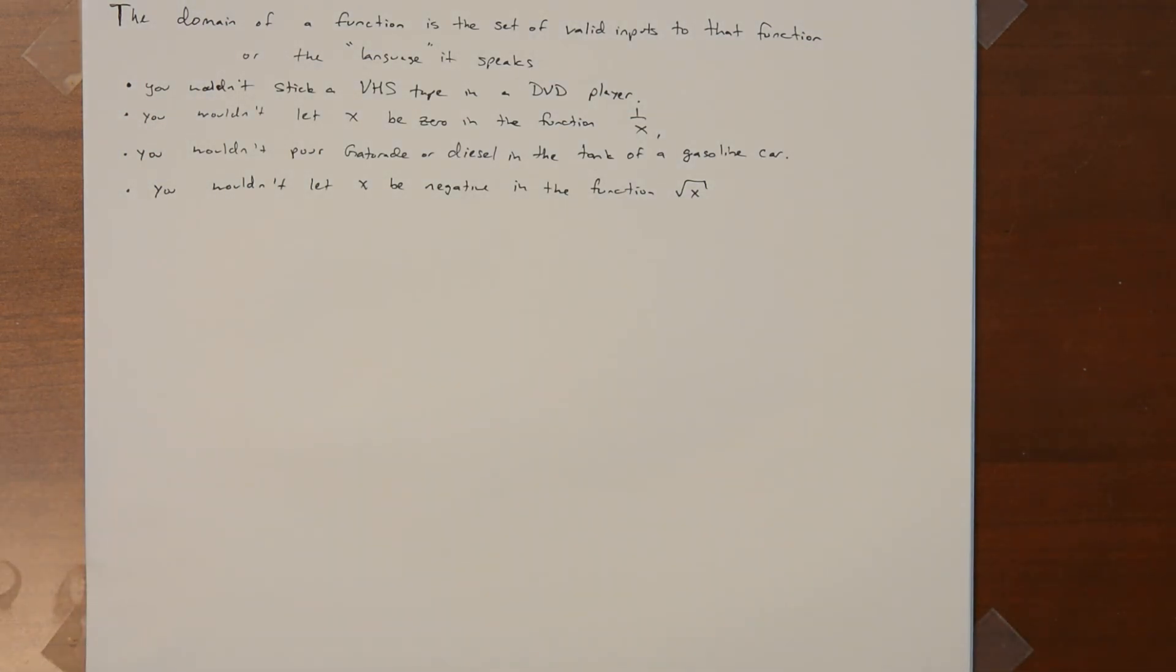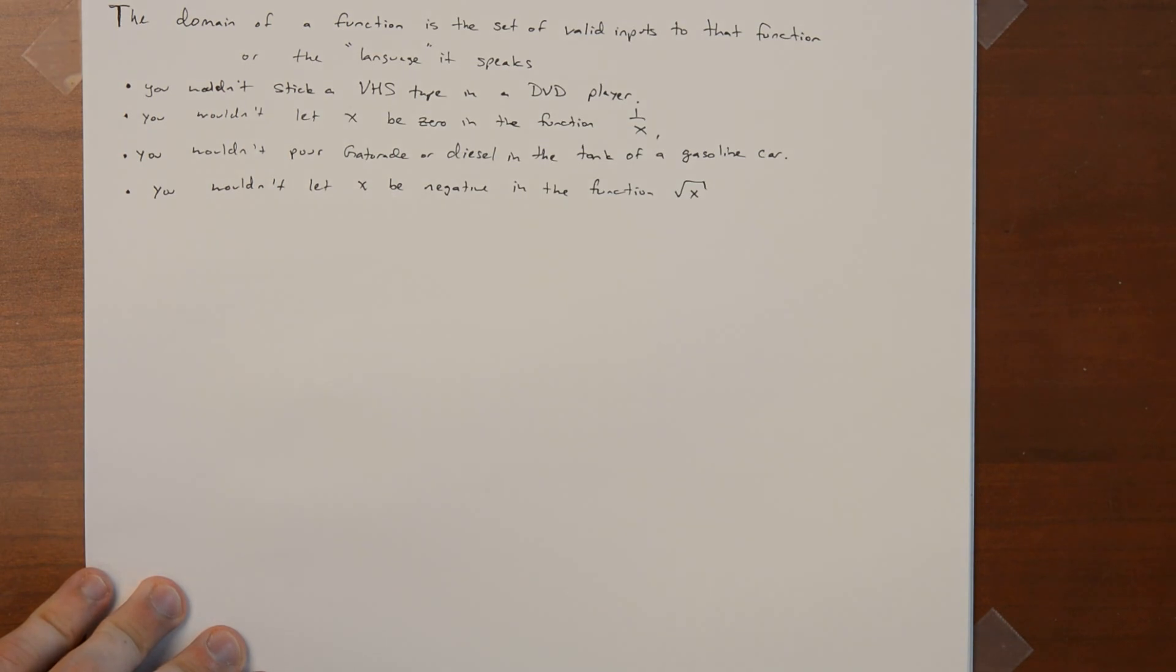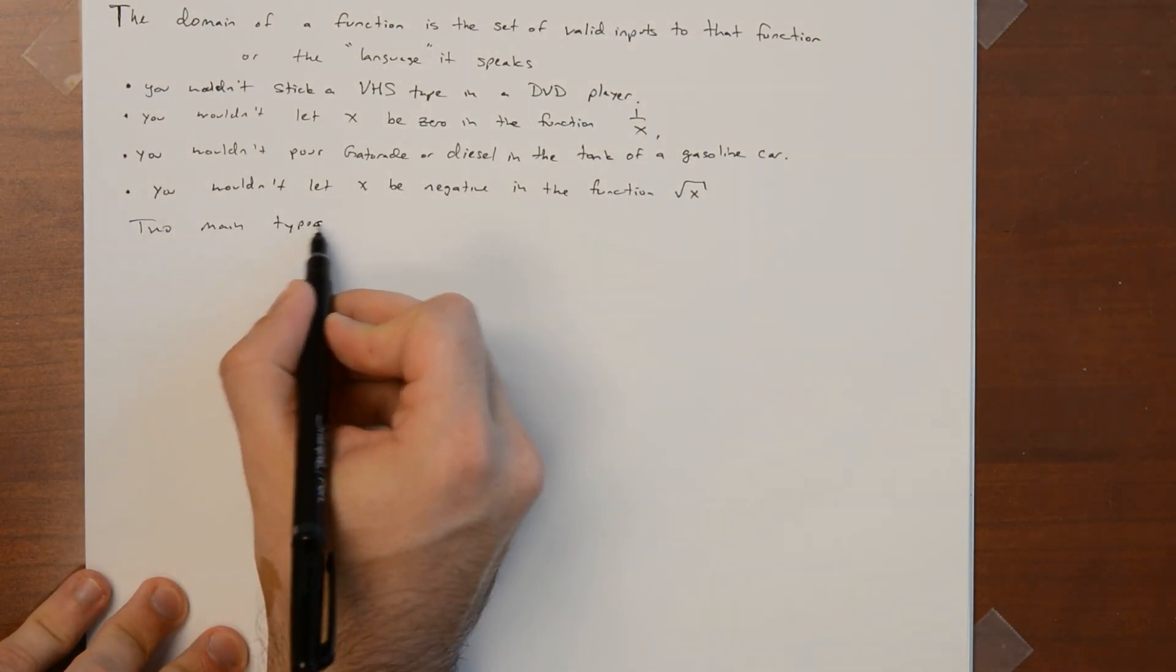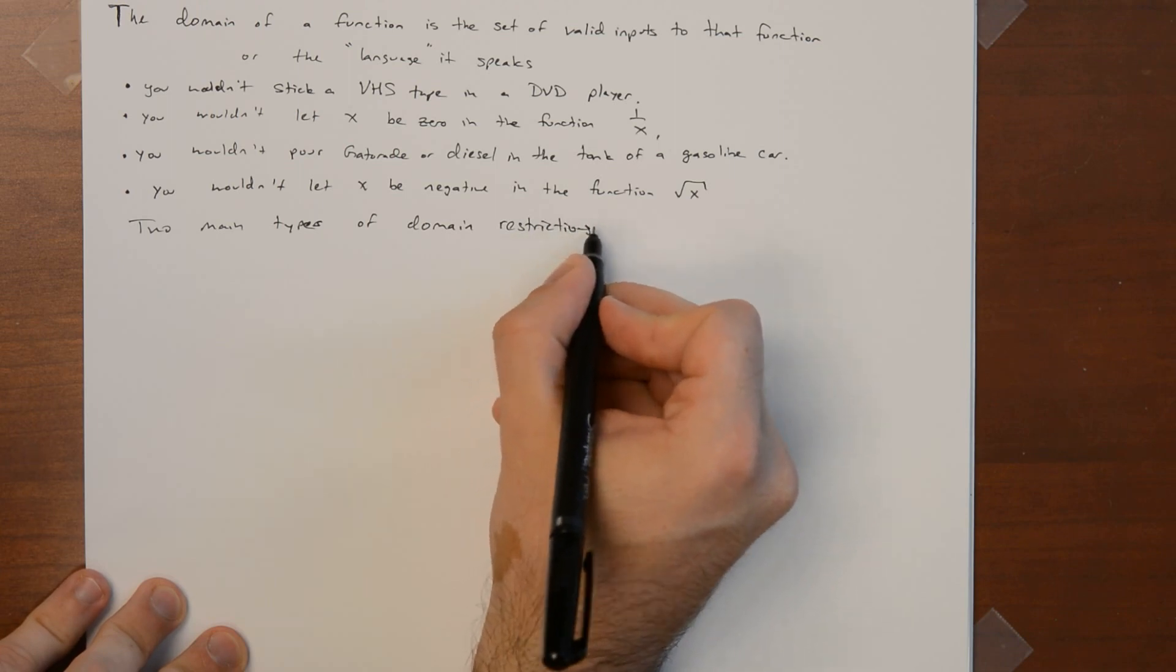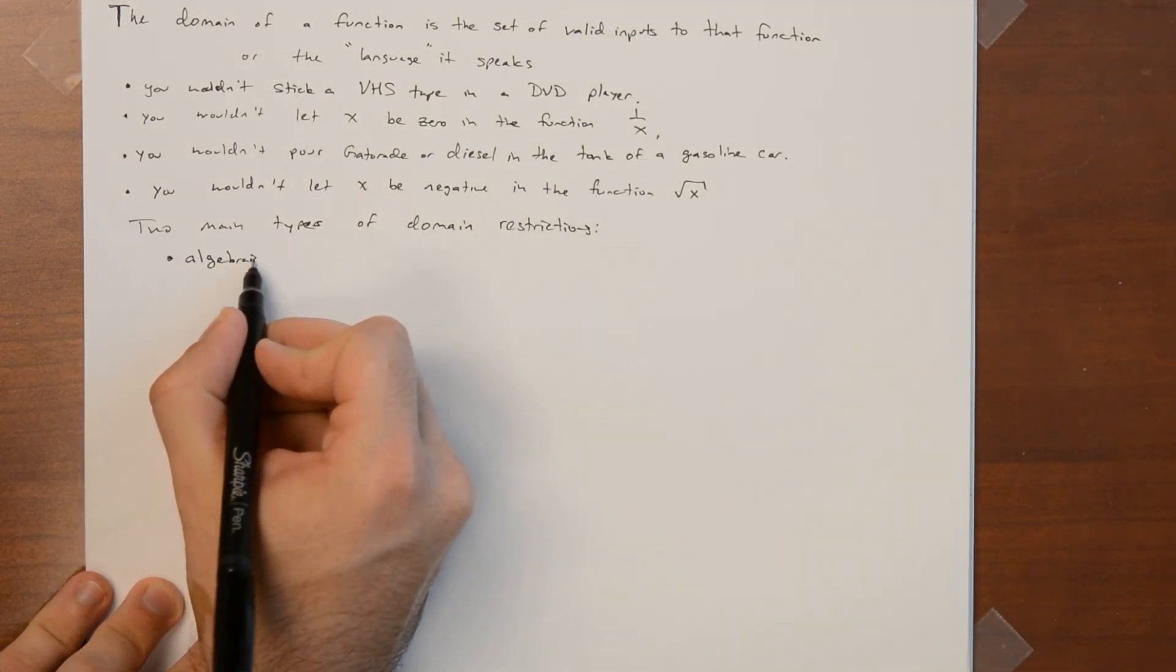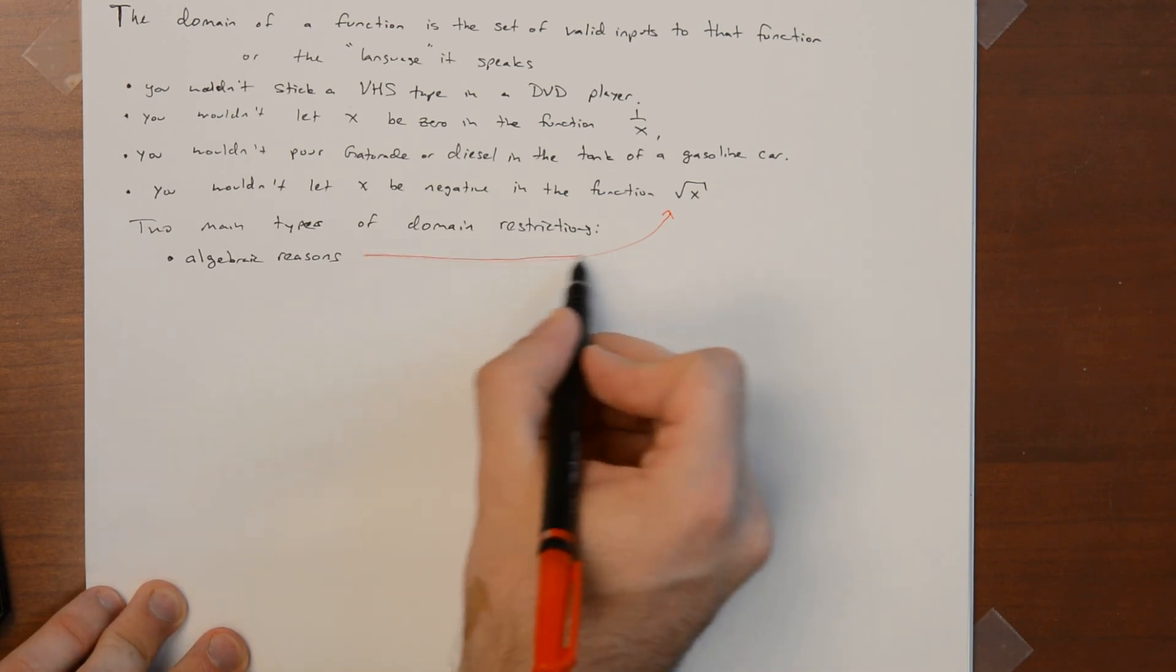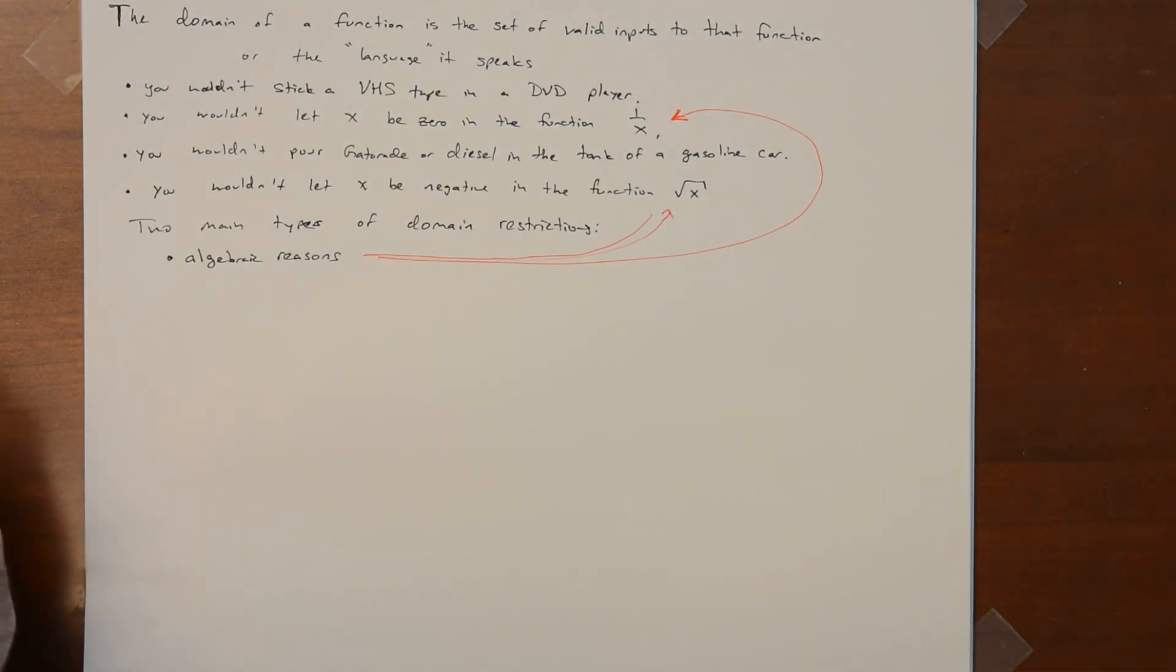So this is what domain is. And there are sort of two main restrictions on domains. In this class we're talking about functions between the numbers and numbers. There's sort of algebraic restrictions. Not doing stuff like this. Not dividing by zero. Not taking the square roots of negative numbers. Not taking logarithms of non-positive things. There's algebraic reasons like those listed above. You wouldn't ask what the function is at zero when you're dividing by that thing. And you wouldn't take the square root of something if it's negative.